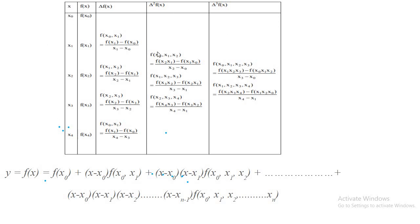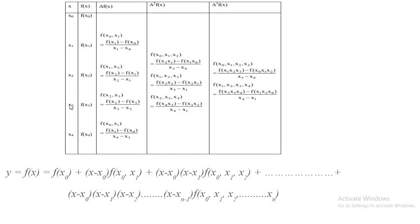How to find these coefficients and how to write the polynomial? We have a set of independent variables and function values: x0, x1, y1 or f(x1), up to x4 or xn. First is the divided difference delta f of x — finding the difference between f(x0) and f(x1): f(x1) minus f(x0) divided by x1 minus x0. Similarly you get it for x1, x2 and for x2, x3 and x3, x4.